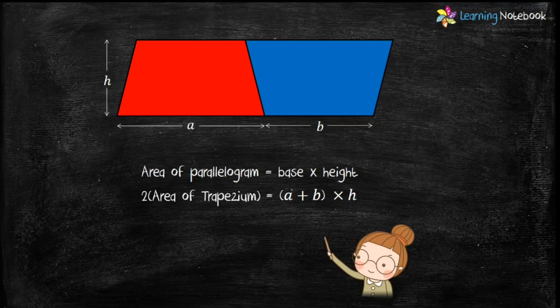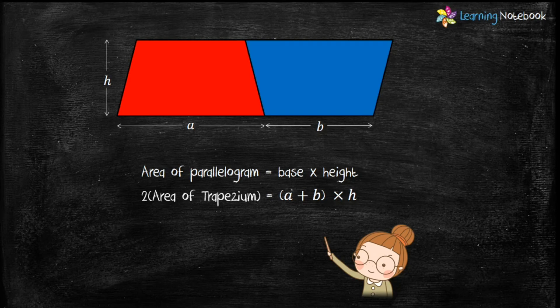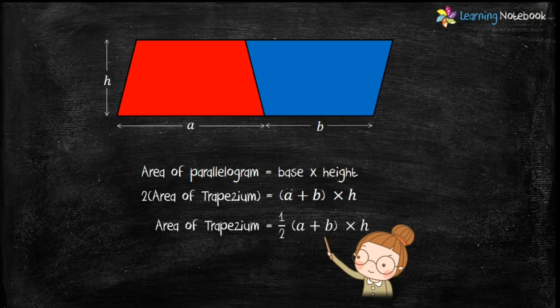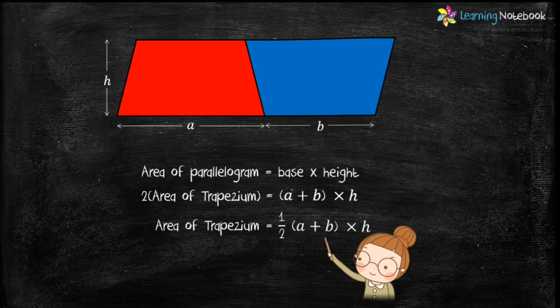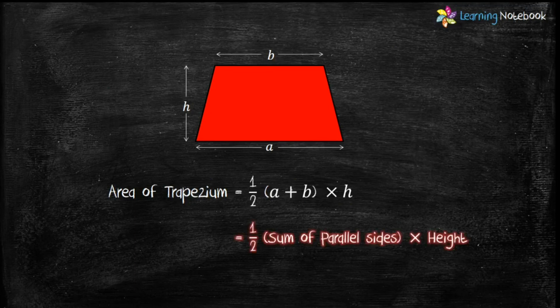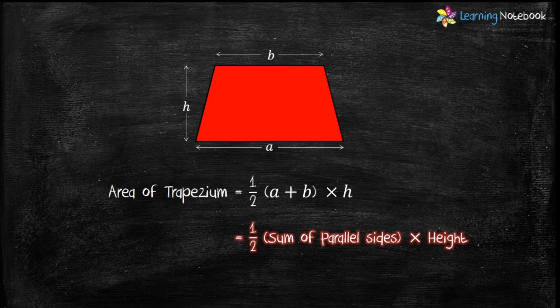Since the parallelogram is made of two identical trapeziums, we can derive: Area of trapezium = 1/2 × (a + b) × h, or Area of trapezium = 1/2 × (sum of parallel sides) × height. So students, do try this activity and I'm sure you would never forget the area of trapezium.